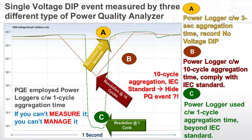To demonstrate the impact of aggregation time on voltage dip measurement, we performed tests using three different types of power quality analyzers measuring the same single voltage dip event. Power quality analyzer A has a 3-second aggregation time. Power quality analyzer B has a 10-cycle aggregation time, which is 100% compliant with IEC 61430 Class A requirements. Power quality analyzer C has a 1-cycle aggregation time, also 100% compliant with IEC 61430 Class A and beyond that standard.